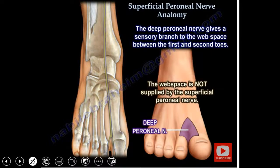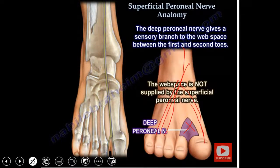The deep peroneal nerve gives a sensory branch to the web space between the first and second toes. The superficial peroneal nerve will supply everything else except that little area. So we can test it for compartment syndrome, because the anterior compartment is the most commonly affected compartment in compartment syndrome.